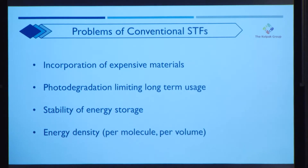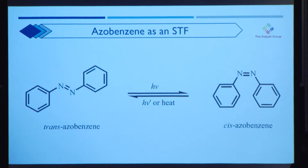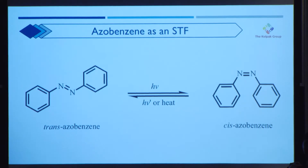An important term to note here is molecular energy density, which I'll use interchangeably with the delta H value throughout this presentation — defined as the amount of energy a single molecule can store. Identifying one solar thermal fuel molecule that can address all of these problems is key to improving both the economic and environmental viability of solar thermal fuels. It turns out there is one molecule that performs well on most of these problems: azobenzene. Azobenzene is an incredibly attractive solar thermal fuel because it is cheap, resistant to photodegradation, and incredibly stable. Its one downfall is that it isn't energy dense.